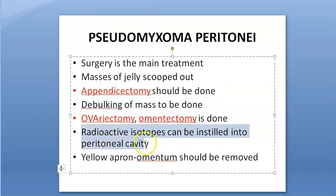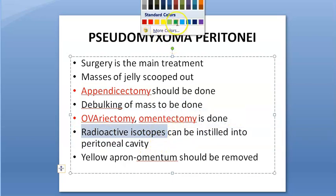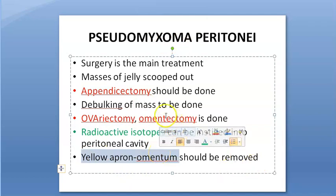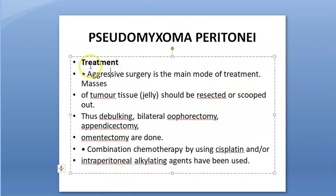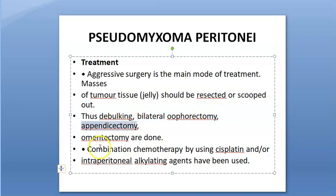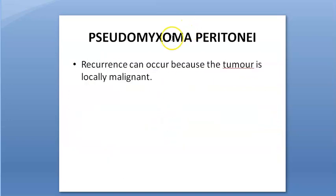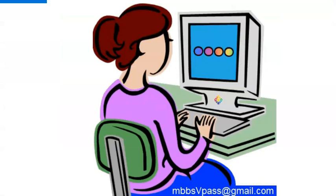After debulking, you can instill radioactive isotopes so it doesn't spread again. Omentectomy — the yellow apron that is the omentum — should also be removed. The brown and yellow jelly masses are resected or scooped out. Bilateral oophorectomy is performed. Combination chemotherapy using cisplatin and intraperitoneal alkylating agents can be used, along with radiotherapy. However, after all this, it can recur because the tumor is locally malignant. That is all about pseudomyxoma peritonei.